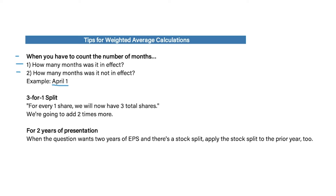For stock splits: a three-for-one stock split means for every one share, you'll now have three shares total, so you add two times more. A two-for-one stock split means for every one share, you'll now have two shares, so you double the amount. Lastly, when reporting EPS for two years of presentation and there's a stock split, apply the stock split to the prior year's balance as well.